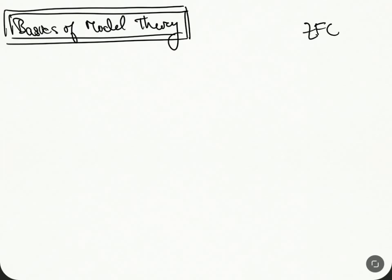There are kind of two parts of any study of logic. There's the semantic part and there's the syntactic part. The syntactic part is this purely formal part where you build up symbols and the rules for the symbols. The semantic part is where you try to assign meaning to these things. Let me give the basic idea with a little diagram.